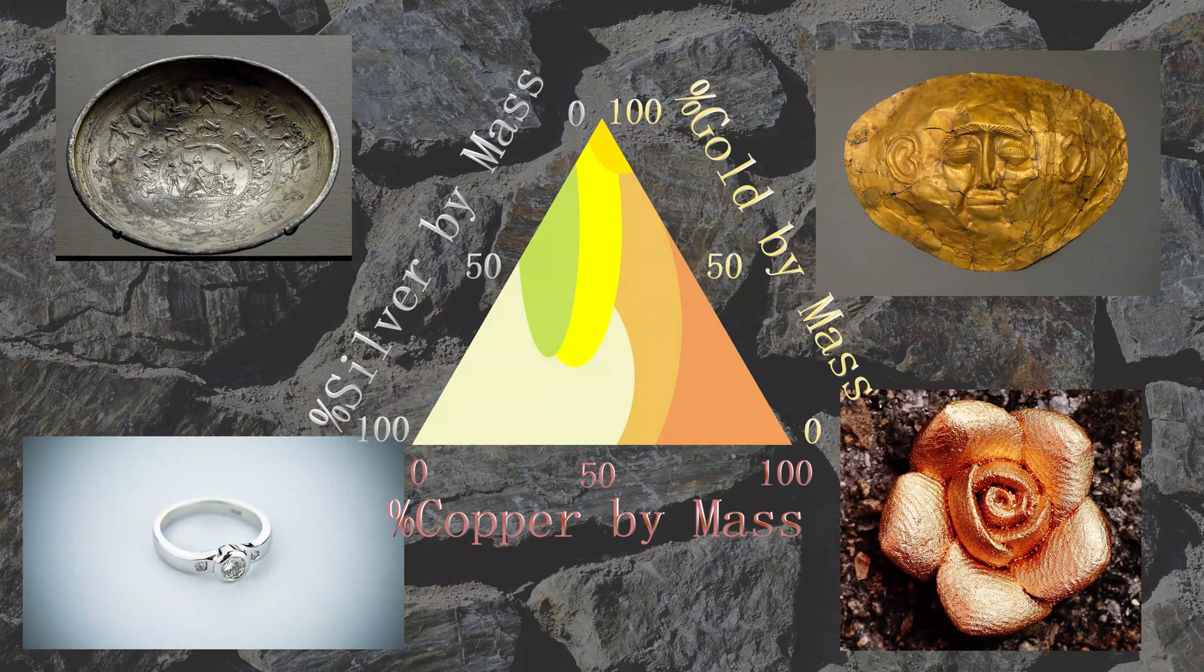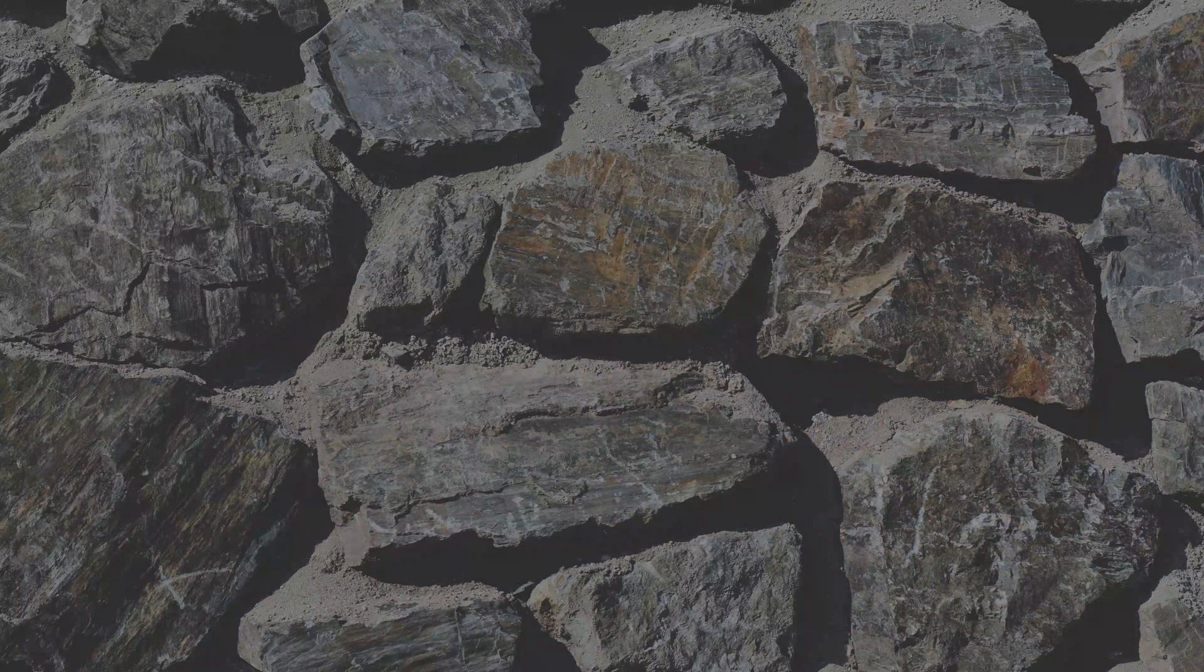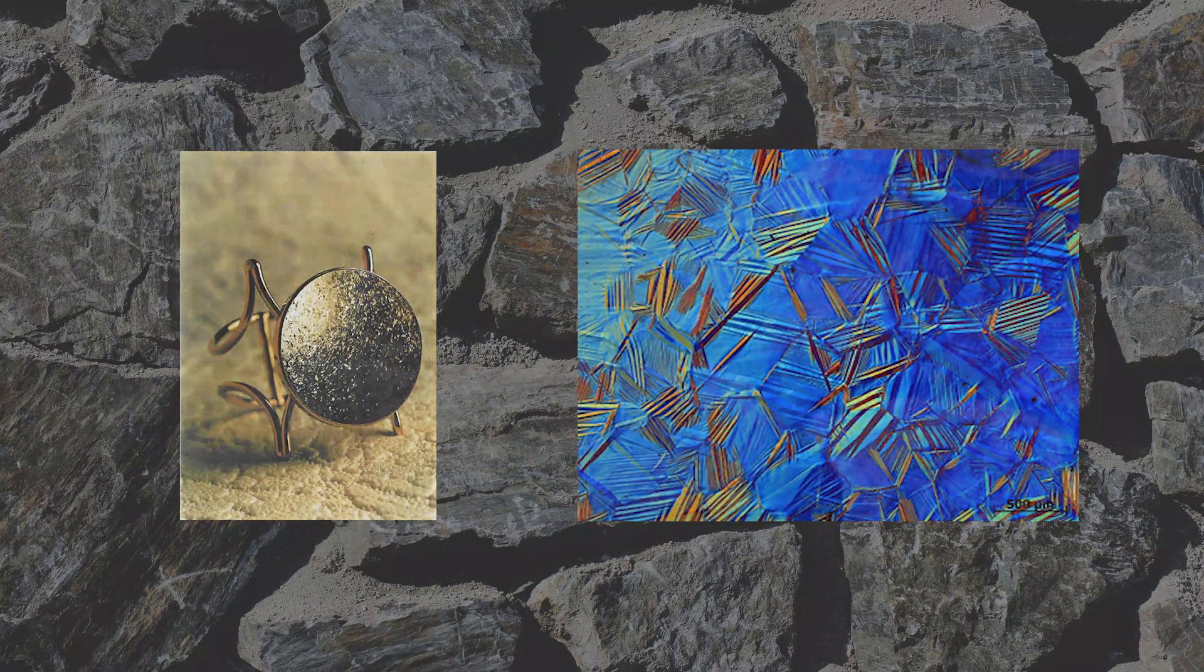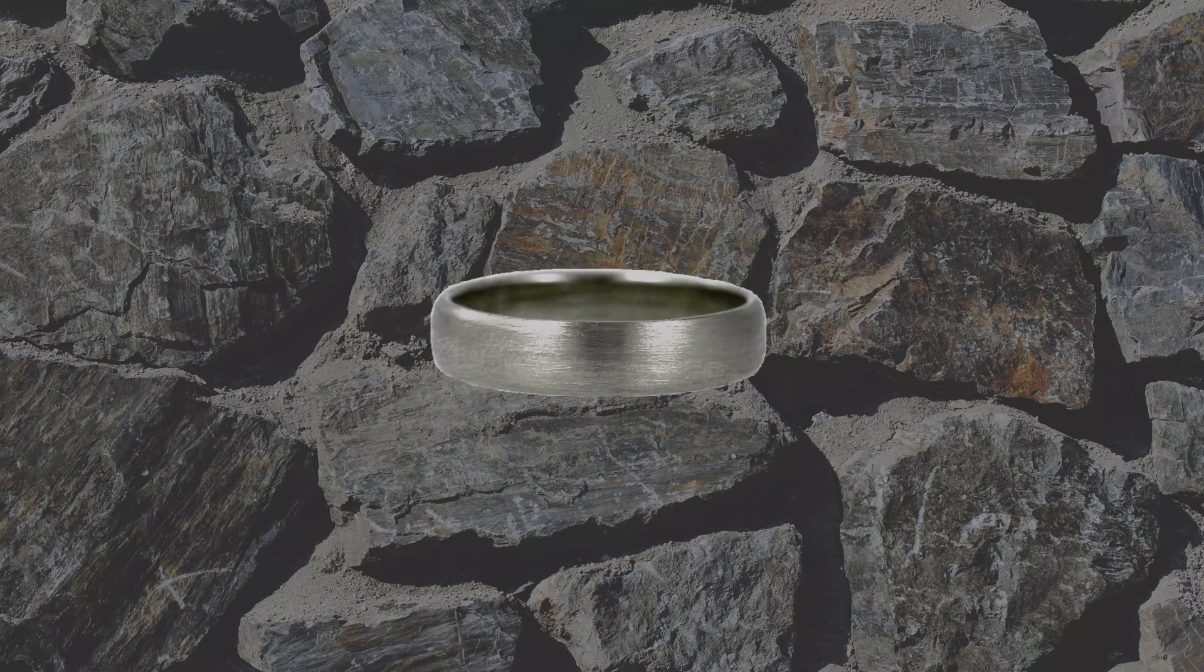Other colors can also be made from alloys with different metals. For example, spangold is an alloy of aluminum and gold, and gray gold can be made with palladium and gold.